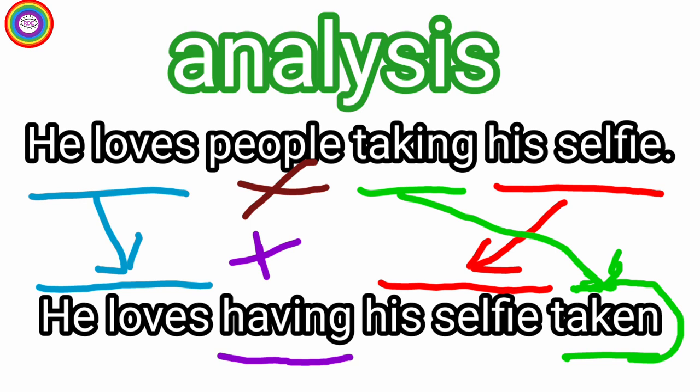We can make analysis like this way. He loves people taking his selfie. Here, he loves remains the same, there is no change. People is omitted while changing to passive because it's an unclear subject. Then we take having instead of being here because his selfie is an object, not people. It's a thing. So we use having instead of being his selfie. Then we use V3 taken. He loves having his selfie taken.